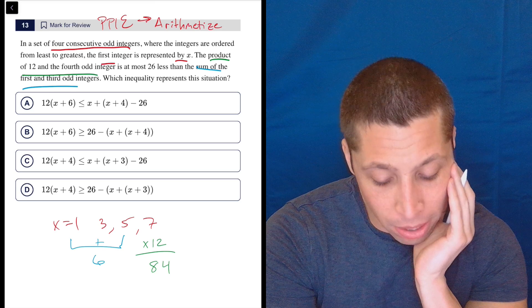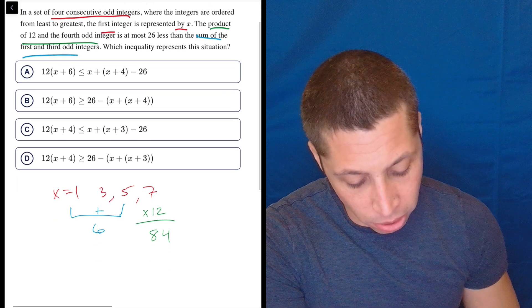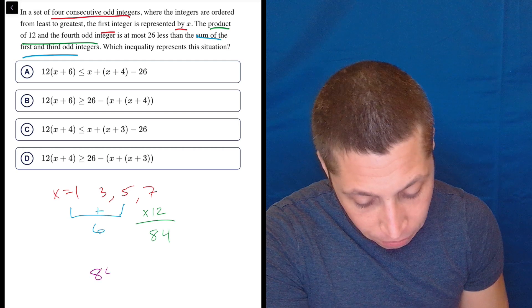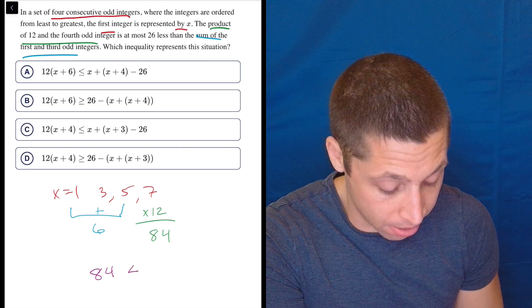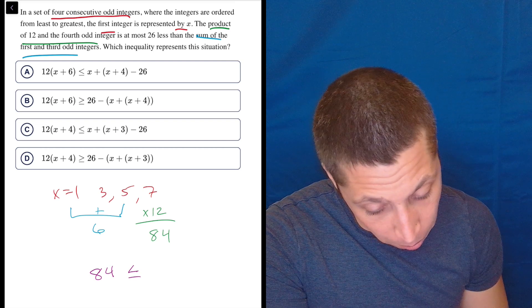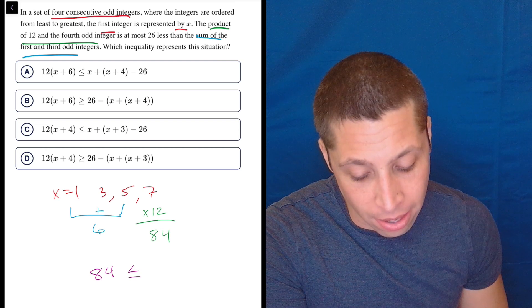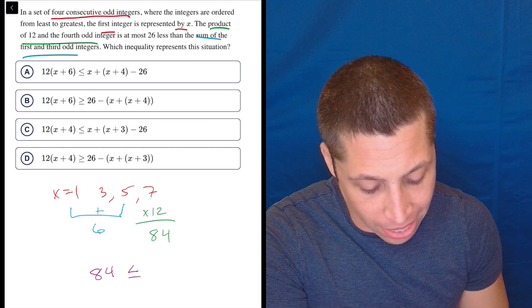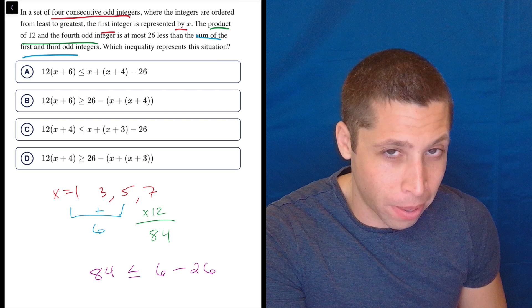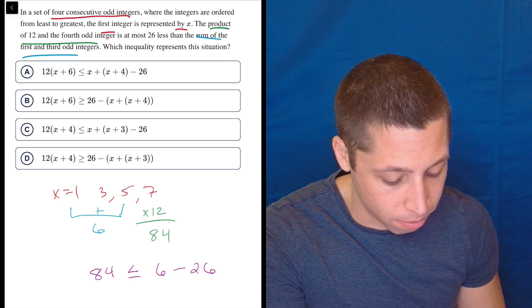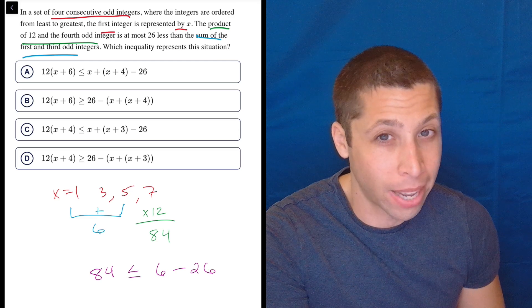So the product of 12 and the fourth, that's taken care of, is at most, so if I'm starting to rearrange things, 84 is at most, meaning it's less than or equal to the, where were we? Is at most 26 less than the sum of the first and third. That means it's less, 26 less than six. Now, if I do six minus 26 and finish the job here, I get something that doesn't make sense. I get 84 is less than negative 20 and it's not.